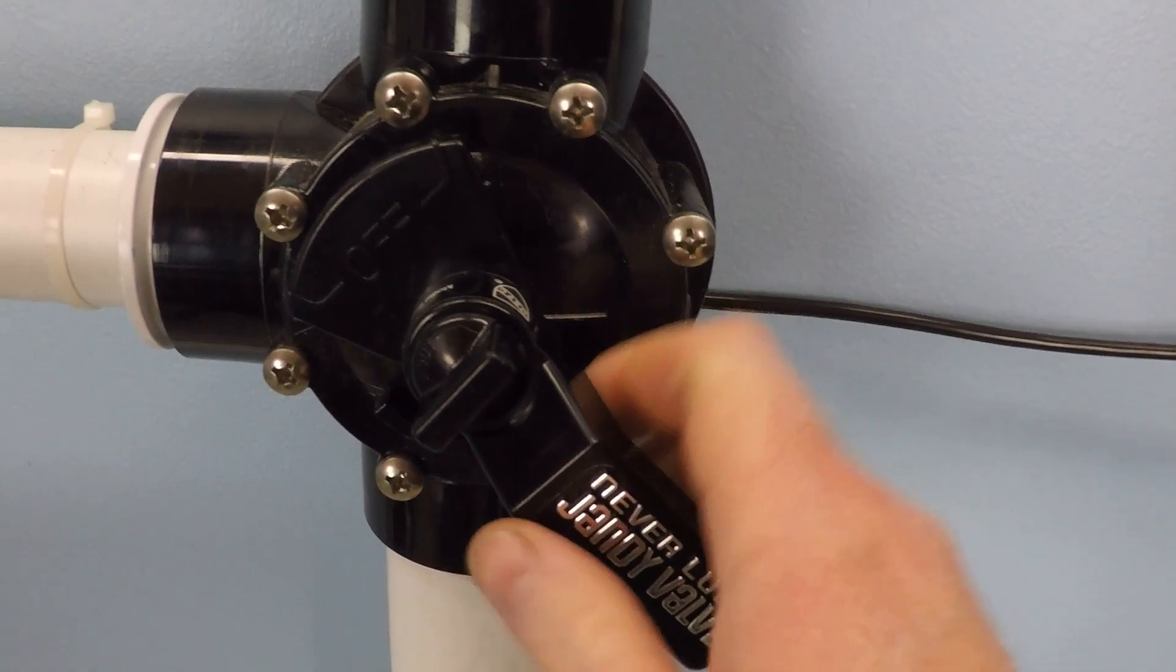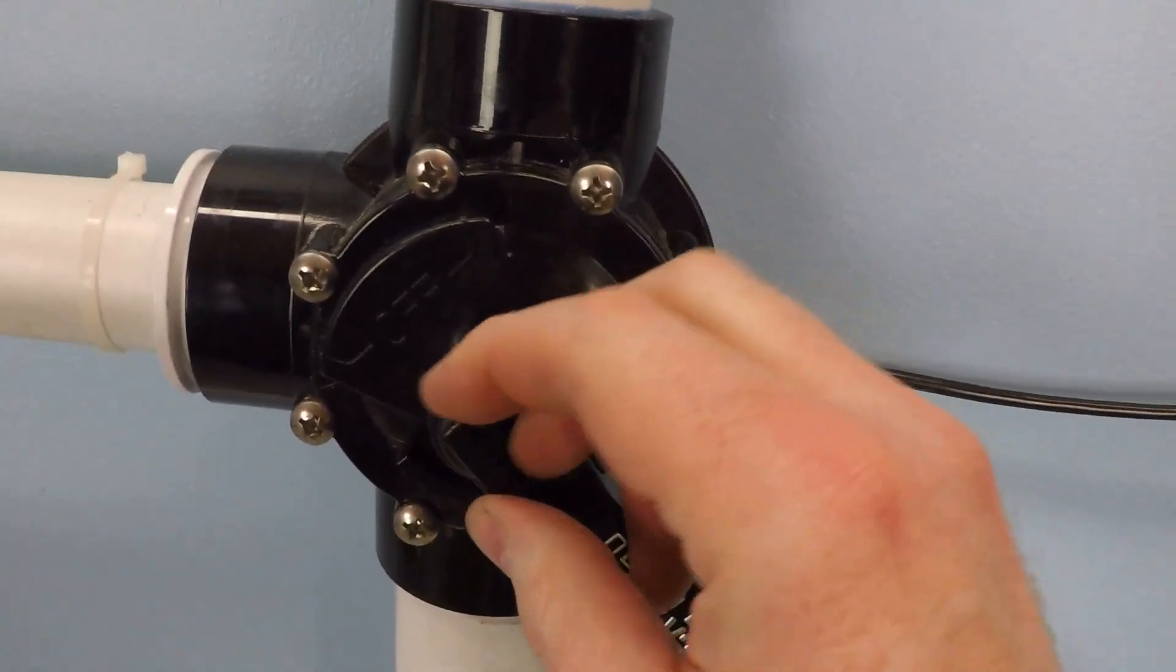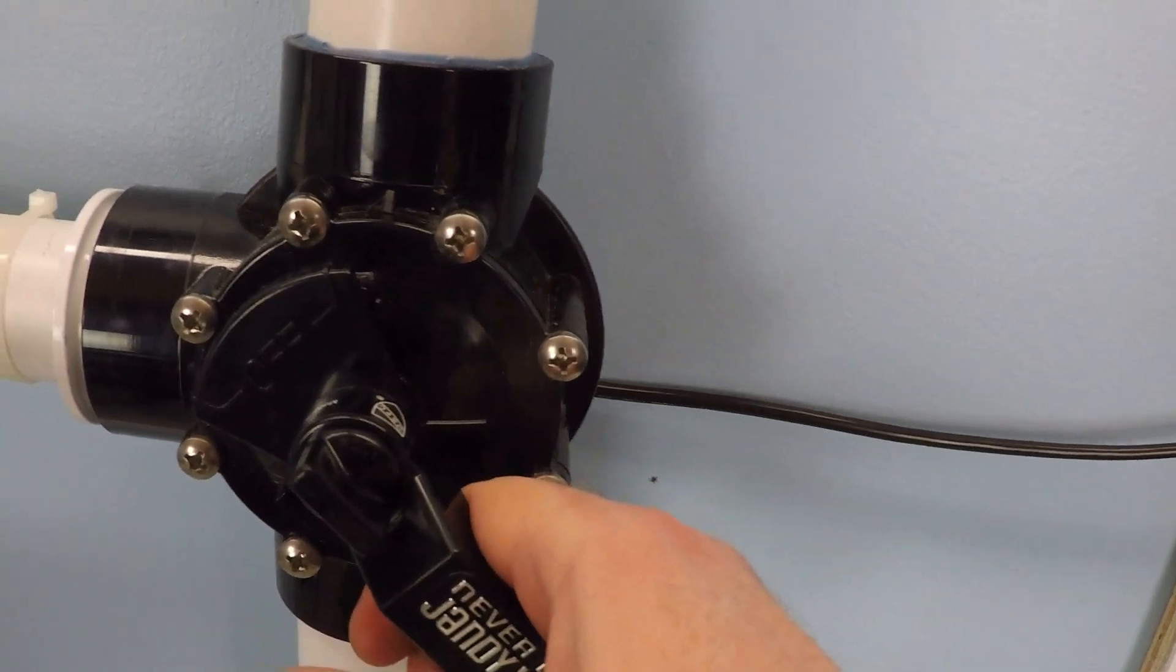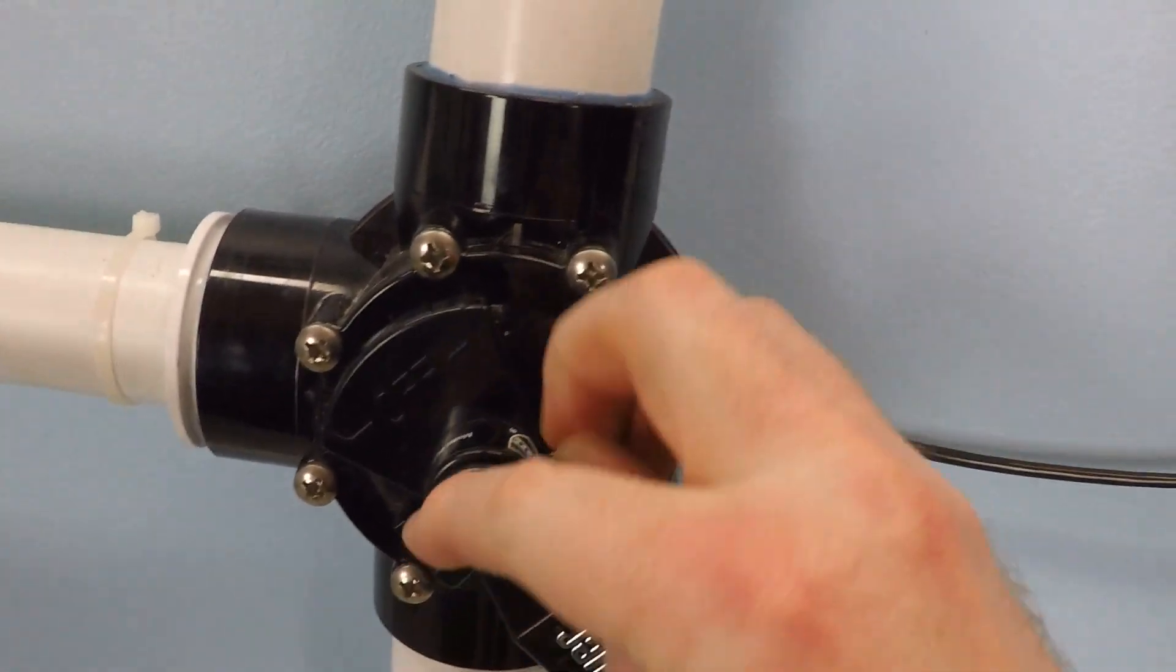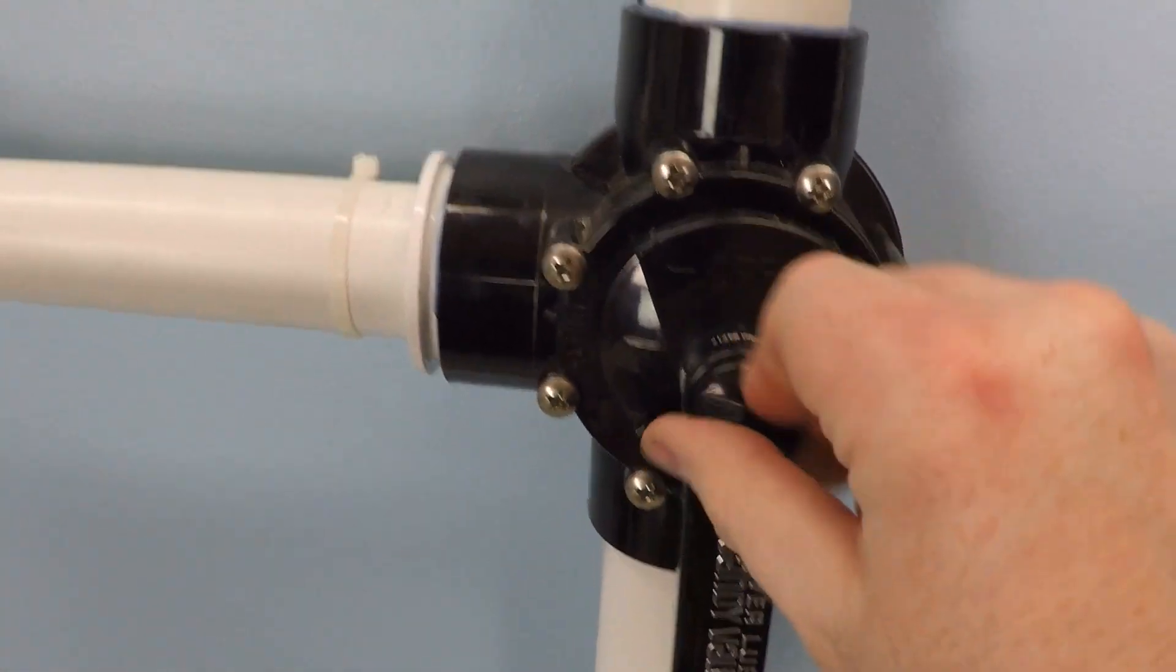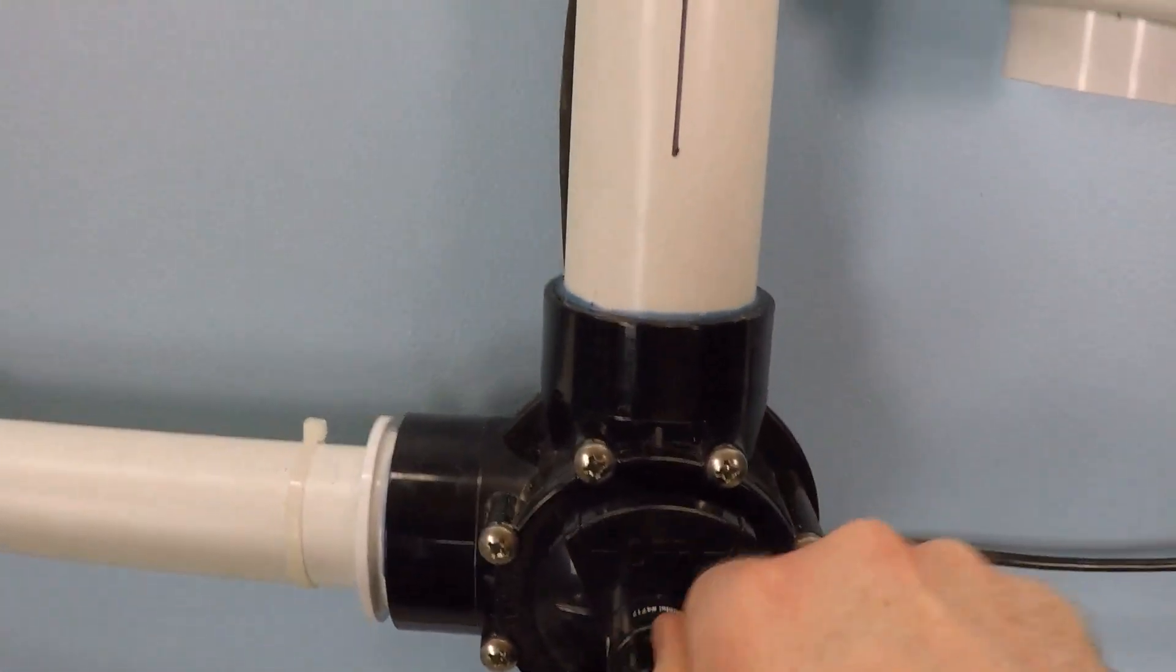Sometimes it just goes no problem, but sometimes it doesn't. So what you need to do is you're just going to loosen this guy just a little bit, pull out just a little bit, a little bit more. And then you can turn it and go ahead and tighten it back up.